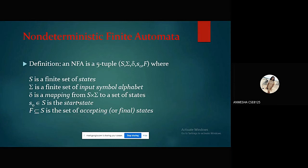Then we have non-deterministic finite automata. This has been given just to show what happens in an NFA, that is in a generator when it converts into NFA. An NFA is a 5-tuple (S, Σ, δ, s₀, F) where S is a finite set of states, Σ is a finite set of input symbol alphabet, δ is the mapping from S×Σ to states, s₀ is the start state, and F is the set of accepting or final states.